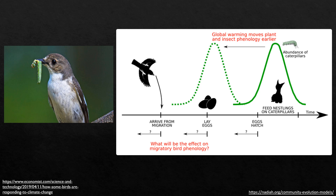The peak abundance for the caterpillar is becoming earlier in the year as the climate warms, but unfortunately the flycatcher is not able to match this peak. The flycatcher is a migratory bird flying up from Africa in the spring, only to find that it has missed the peak in native caterpillars.